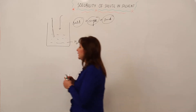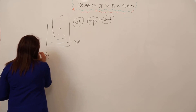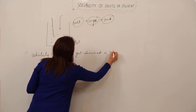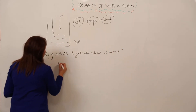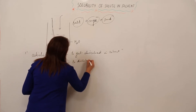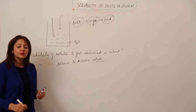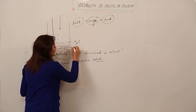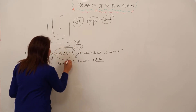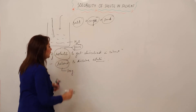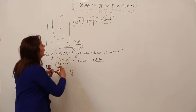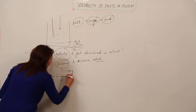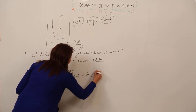So solubility means the ability of a solute to get dissolved in a solvent, or we can say the ability of a solvent to dissolve solute in it. In order to get a uniform result, we have fixed the amount of solute in grams and the mass of solvent as 100 grams. So we can define solubility in a better way using these fixed values.